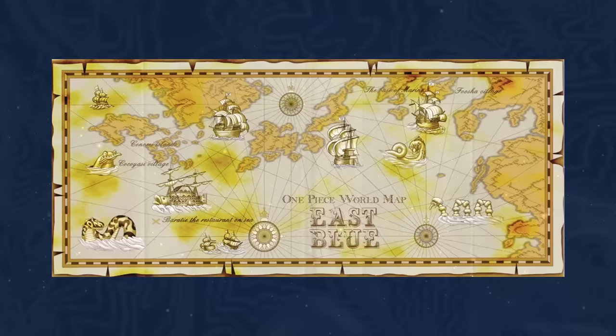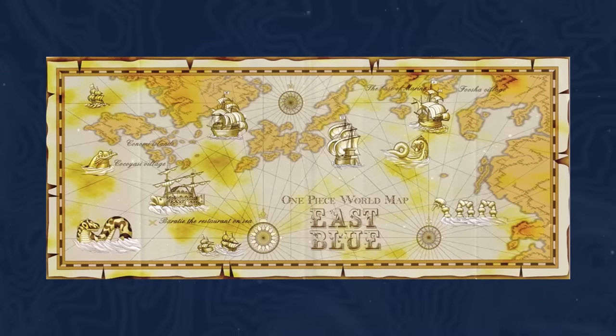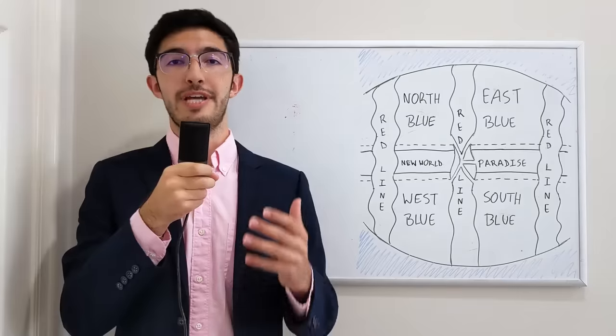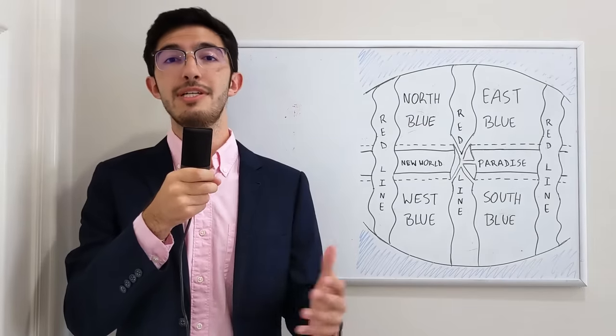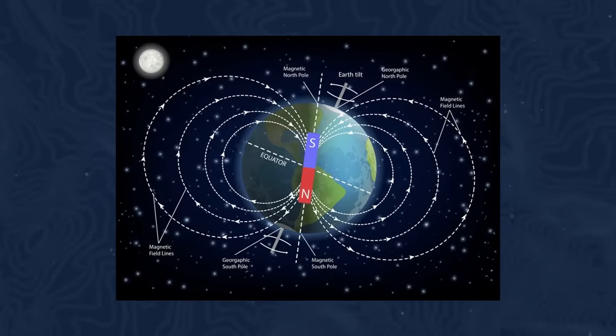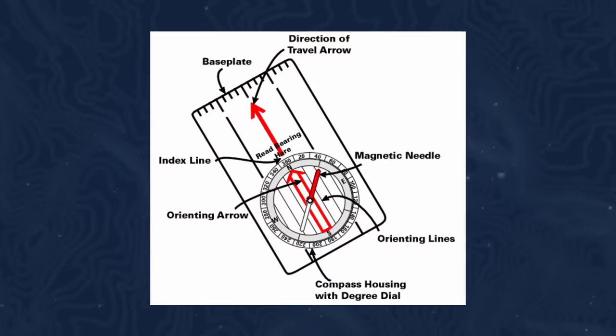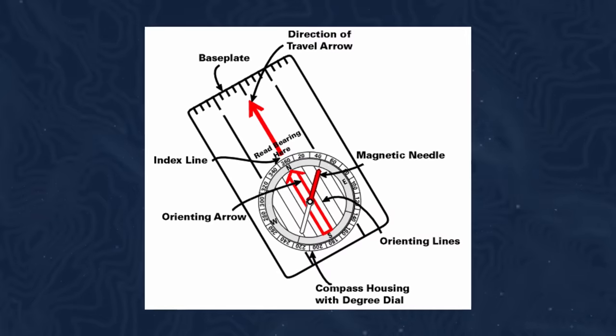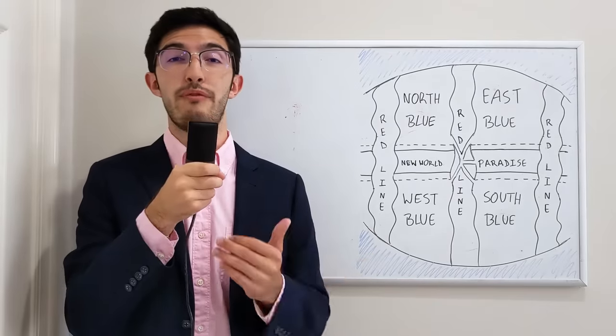Of course, these blues are filled with a bunch of little islands that you can travel between using normal compasses, which indicates that the world of One Piece does indeed have a magnetic north. And that is because normal compasses use magnetized needles or compass roses to point towards the direction of a magnetic north in order to guide you to wherever you want to go.